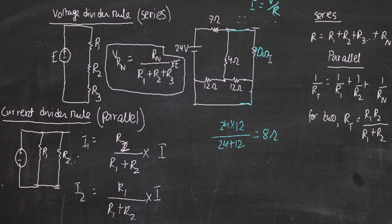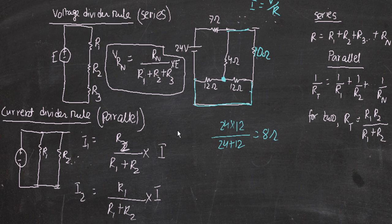Now we can identify the series and parallel relationships more clearly. Looking at the circuit, 12 ohms and 12 ohms share one common junction on one side and another common junction on the other side — so they are in parallel. Using the formula: (12 × 12) / (12 + 12) = 6 ohms. When two equal-valued resistors are in parallel, the combined resistance is just half — so half of 12 is 6 ohms.